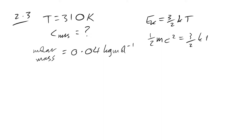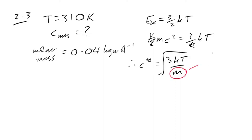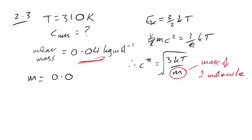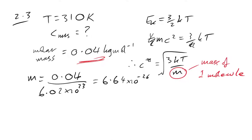We also know Eₖ = (1/2)mc²_RMS = (3/2)kT. Rearranging: c_RMS = √(3kT/m). This m is the mass of one molecule, so we can't just use 0.04 kg — we need to find the mass of one molecule by dividing the molar mass by Avogadro's number: m = 0.04 / 6.022×10²³ = 6.64×10⁻²⁶ kg. Substituting in: c_RMS = √(3 × 1380 × 310 / 6.64) × 10³ ≈ 439.6 m/s, which we round to 440 m/s.